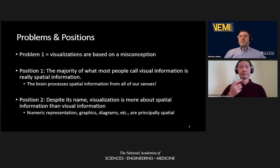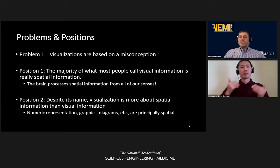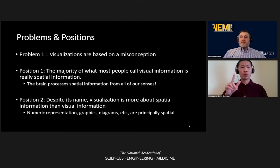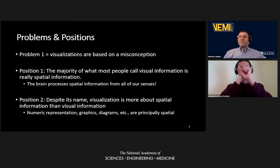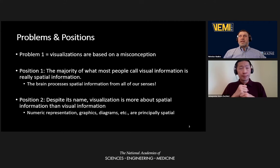I've structured this talk around a few problem statements that I argue underlie a lot of the issues I'm discussing, and I'm following these up with positions and hypotheses that not only make my point but also serve as guidance for moving us toward needed solutions. My first problem statement is that most of the tools, technologies, and terminology that we use to perform or talk about visualizations are based on a misconception about the visualizing process. Whether we're talking about data visualization, visualization of a process or design, conceptual visualization, or visualizing something in our heads — all of these make a mistake, and the mistake is in the belief that what is happening is about vision and visual information.